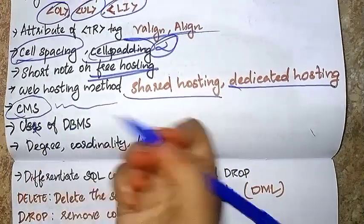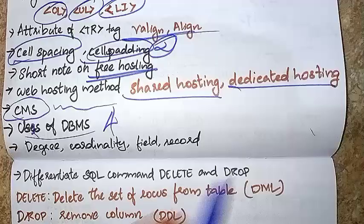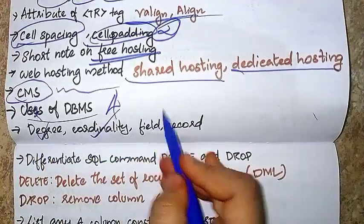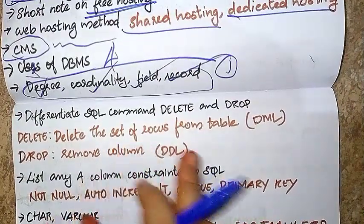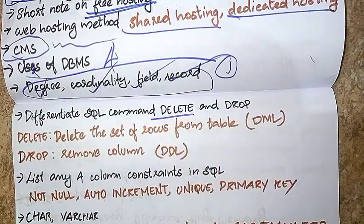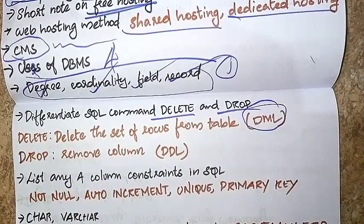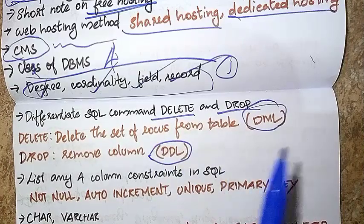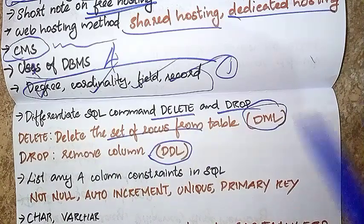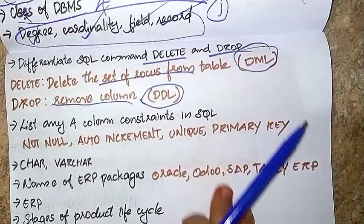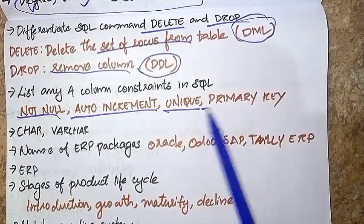Users of Database — users include sophisticated users and managers. Then Degree, Cardinality, Field, Record. Differentiate SQL commands DELETE and DROP. DELETE is a DML command that removes a row. DROP is a DDL command that removes a column. Column constraints in SQL: NOT NULL, AUTO INCREMENT, UNIQUE, PRIMARY KEY.